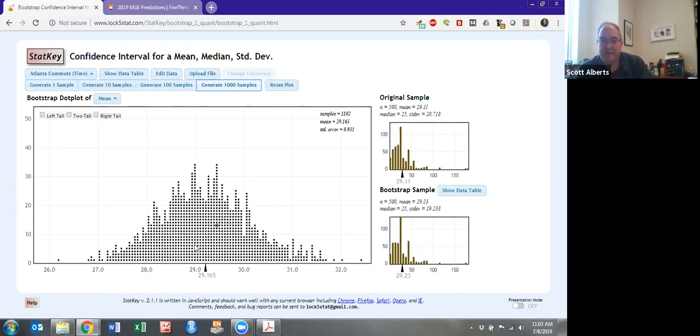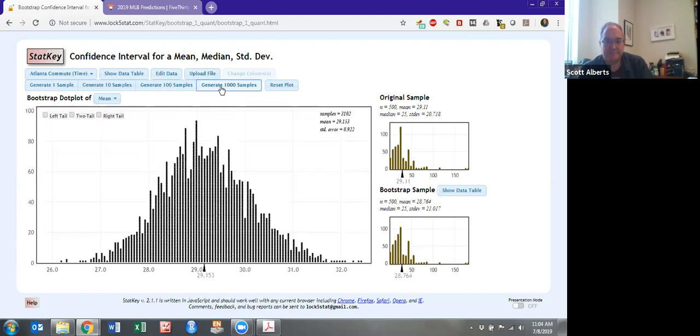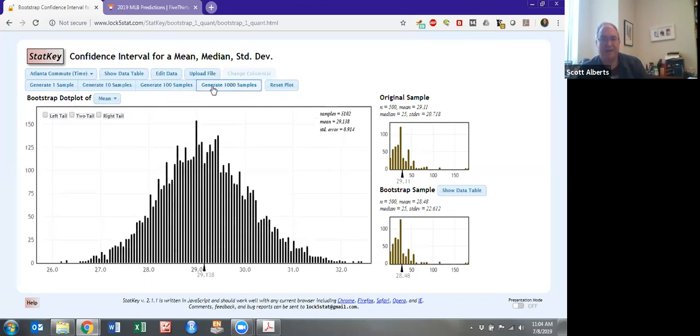Each one of these dots is the mean from one of these bootstrap samples, and each bootstrap sample has a different thing. Doing that by hand would be ridiculous, but doing it on the computer doesn't take very long to do. We can do this a couple times, three, four, five times. So we've now made 5,000 samples of 500 points each. We recorded the mean from each one of them, and you can see as I scroll my cursor around, we can figure that out.